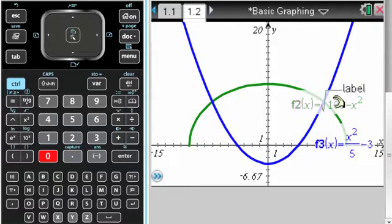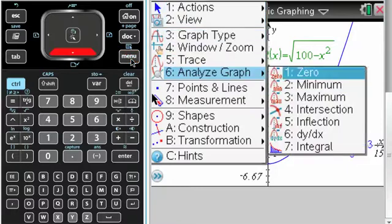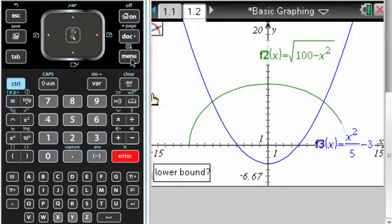It doesn't look all that good, but it doesn't really matter, because I'm just looking for intersections. So what I do is I go to menu, analyze graph, intersection.